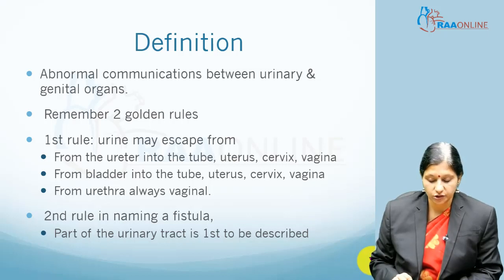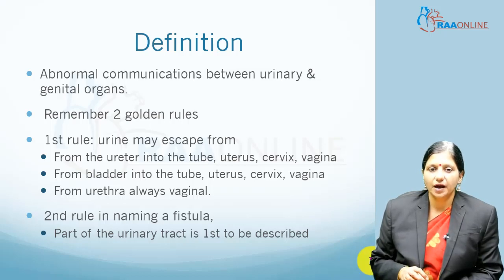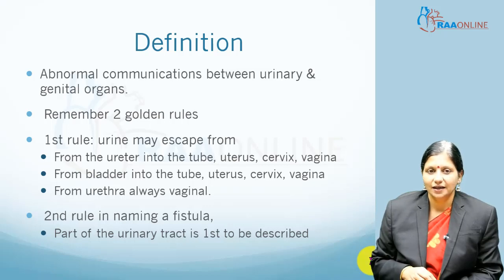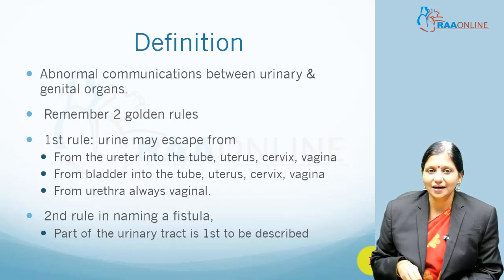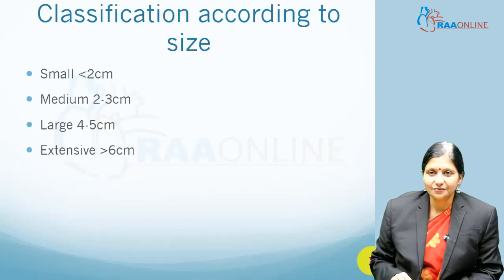The second rule is that when naming a fistula, the first part is the urinary component — such as 'vesico' — and the second part is the genital component — such as 'vaginal.' The urinary tract is named first and then the genital tract.